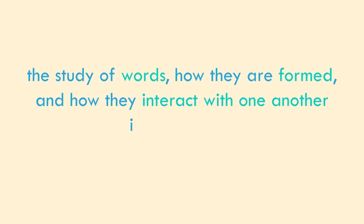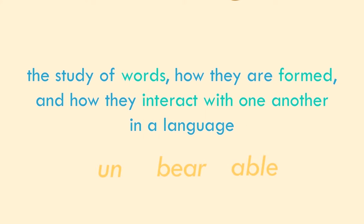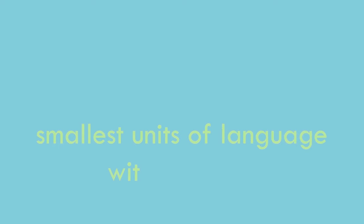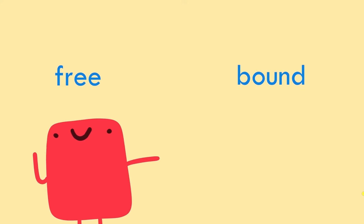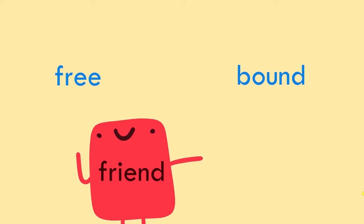Morphology is the study of words, how they are formed, and how they interact with one another in a language. The smallest units of language with meaning are called morphemes. There are two types of morphemes: free and bound. Free morphemes are simple words that can stand alone, like the word 'friend.' Bound morphemes must be used with a free morpheme to form a word and cannot stand alone, like '-ly' and 'friendly.'